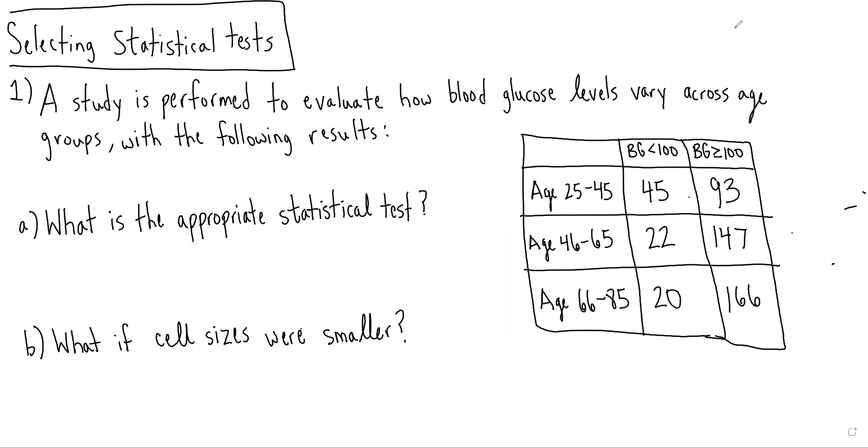We remember from the lecture that there's three scenarios we can think about. We're either going to be comparing a continuous measure, like a mean between groups, comparing categorical measures like count data between groups, or evaluating the association between two variables and not really comparing things between groups.